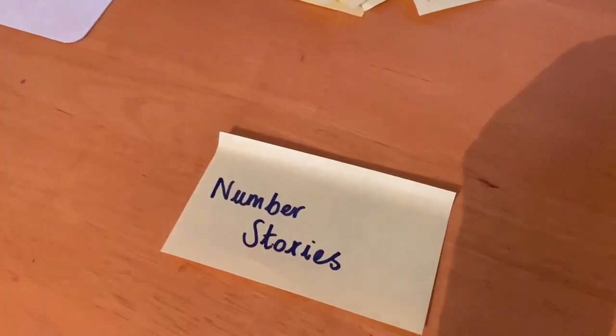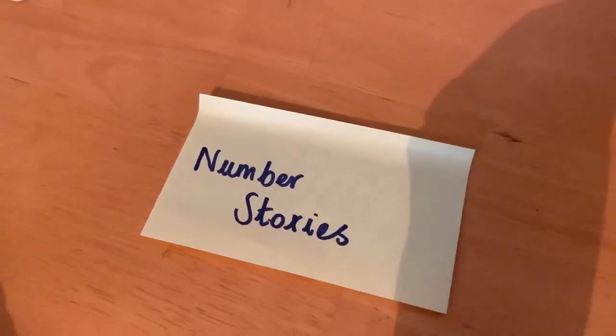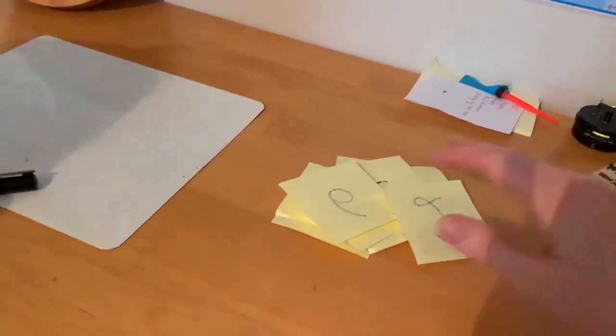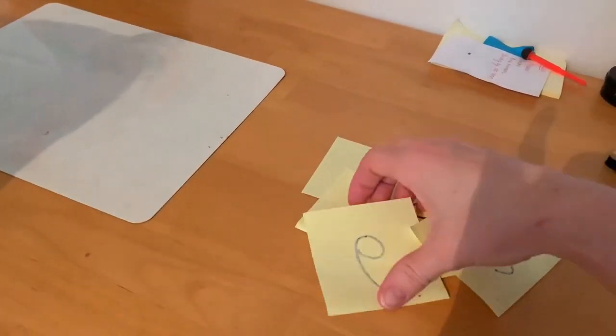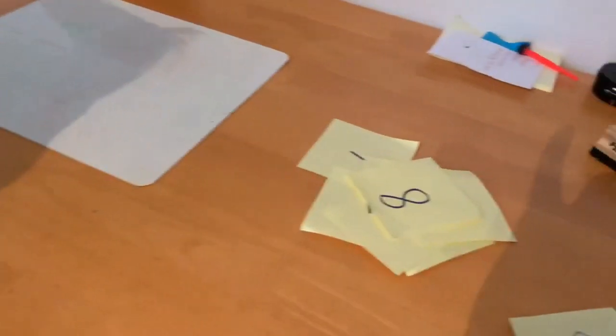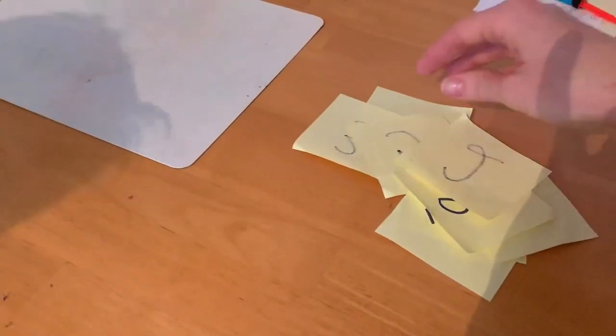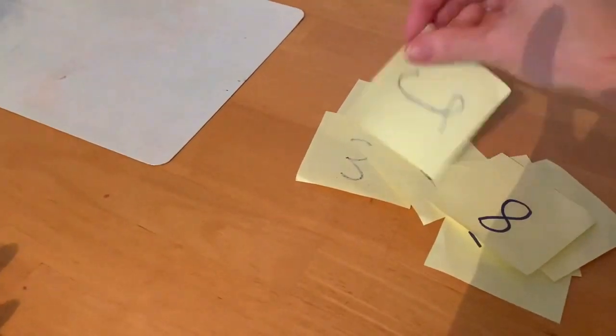Using our 0 to 9 digit cards, we're now going to do some number stories. Archie, I'm going to make up a number story first and I want to see if you can write down the number sentence that goes with this.